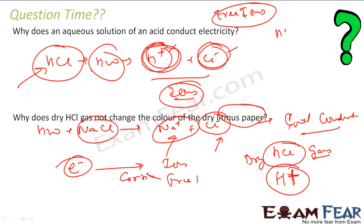But the moment you add dry HCl to water, it gives H⁺ ions, and this H⁺ ion is responsible for the acidic nature of HCl — and it becomes acidic. Hope you understand this. Dry HCl is in gas form and does not have H⁺ ions freely available; they are all bonded. But when you put it in water, it breaks.